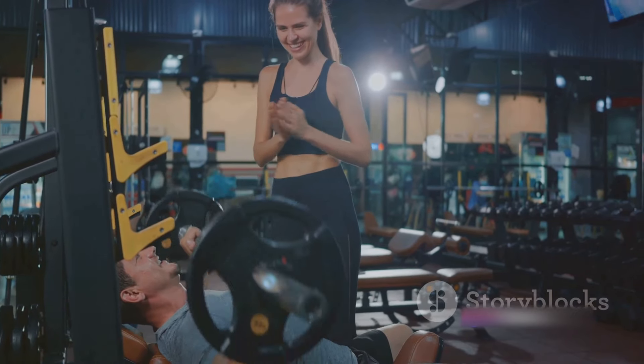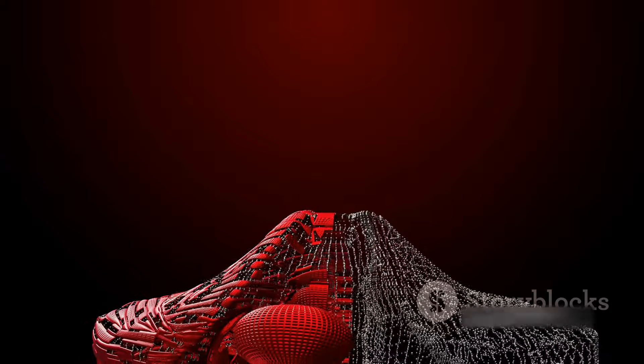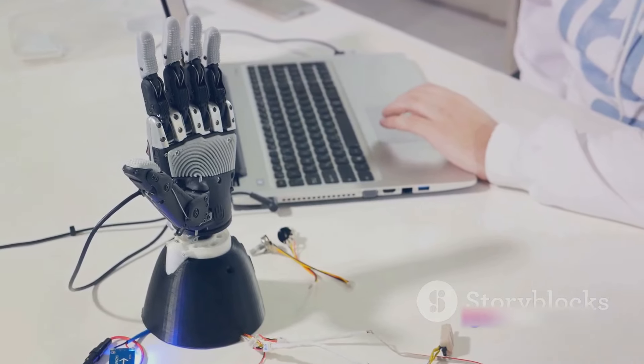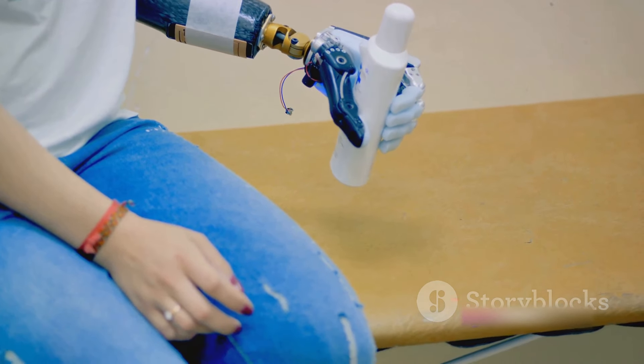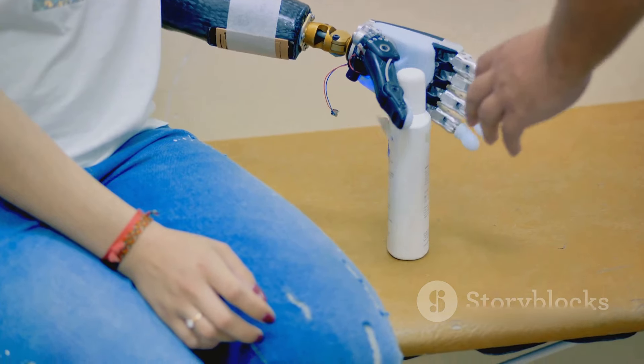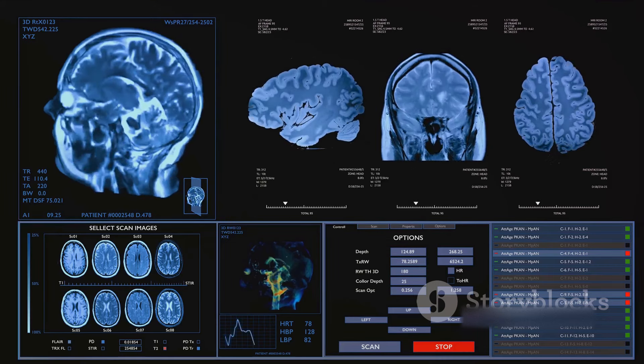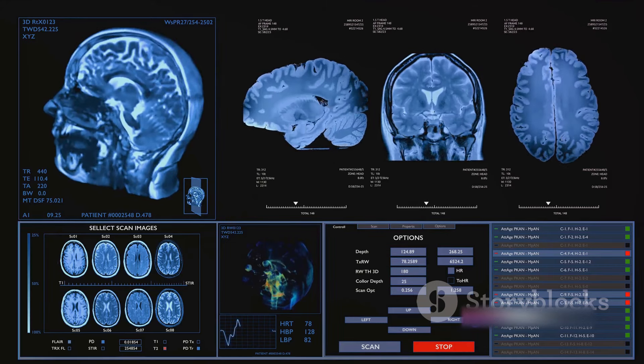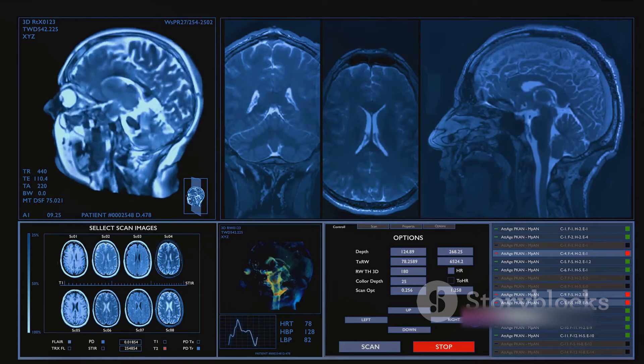Then we have the cutting edge of brain science, technological innovations like brain-computer interfaces or BCIs. Imagine being able to control a computer or a robotic arm just by thinking about it. BCIs can translate brain activity into commands for electronic devices, creating a direct communication pathway between the brain and an external device. This is not just science fiction, it's happening right now and it's paving the way for breakthroughs that could assist people with mobility impairments or even enhance cognitive abilities beyond our natural limits.